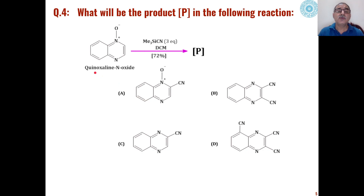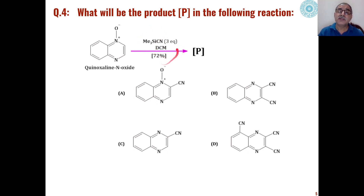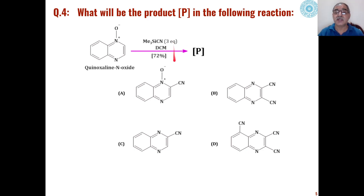The fourth problem involves quinoxaline N-oxides. This molecule is quinoxaline, and the N-oxide has oxygen attached to the nitrogen. When reacted with trimethylsilylcyanide (TMSCN) in the presence of dichloromethane as solvent — using an excess of TMSCN — what will be the product out of these four choices?